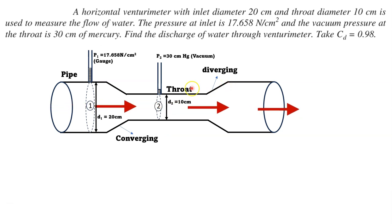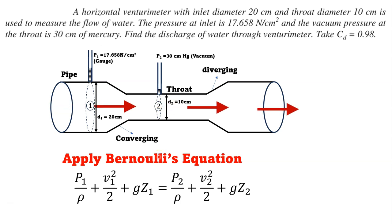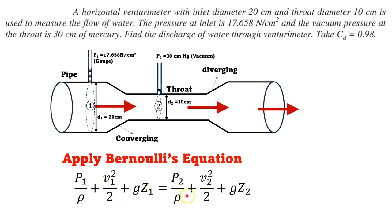First we apply Bernoulli's equation between points 1 and 2. Bernoulli's equation is: P1/ρ + V1²/2 + gZ1 = P2/ρ + V2²/2 + gZ2.